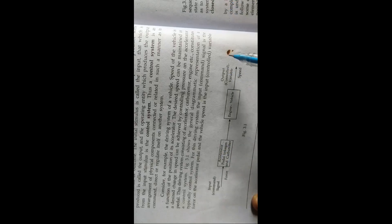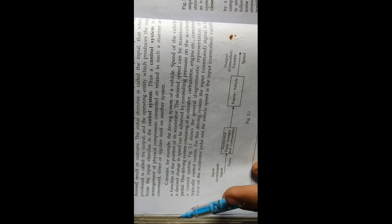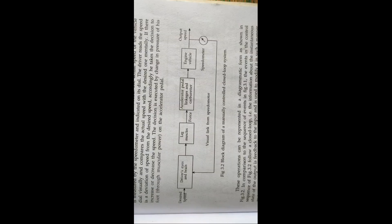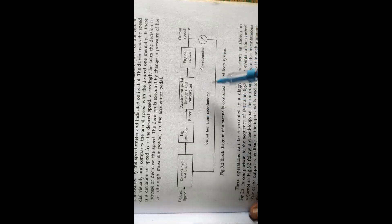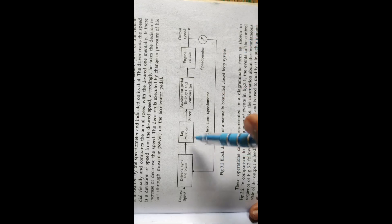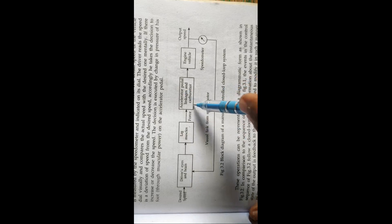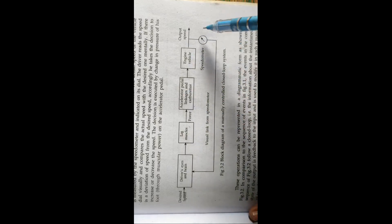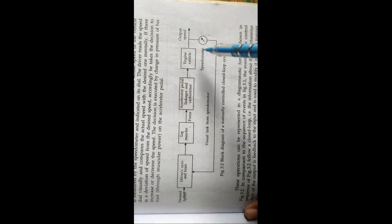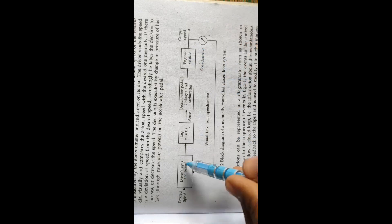Now here is another example using the same driving system. This time the driver's eyes act as the controlling unit, the muscles control the pedal, the engine provides movement, and the speedometer is the output. The driver wants to maintain the vehicle speed at 60 kilometers per hour, and his eyes are on the speedometer directly.